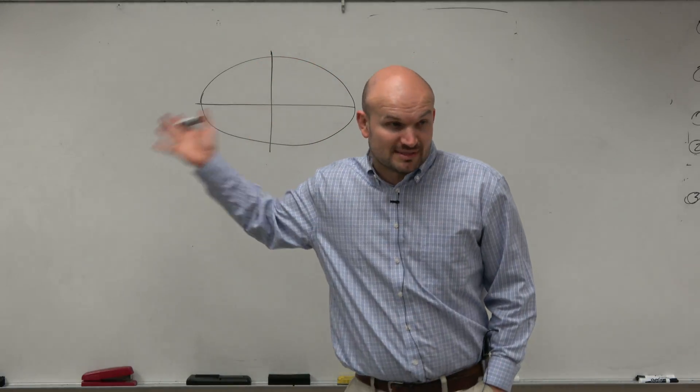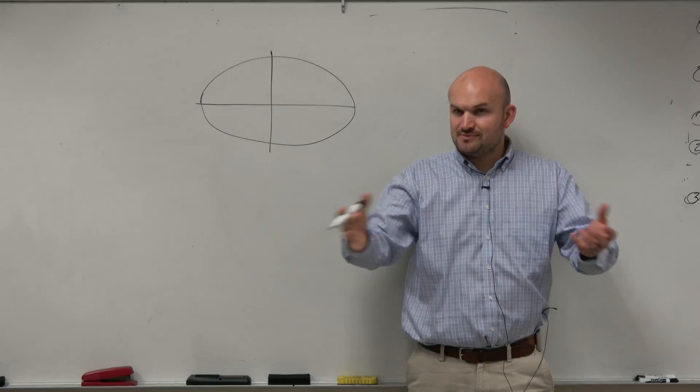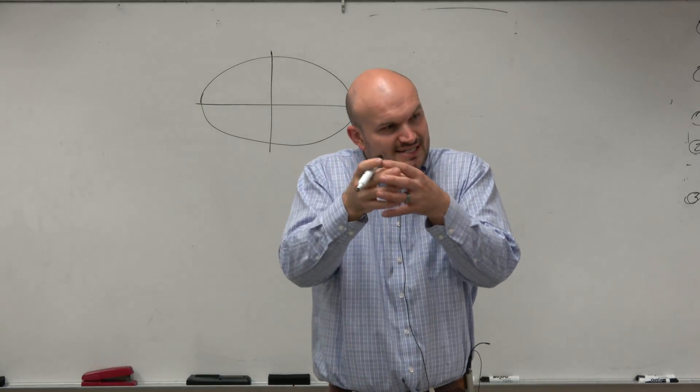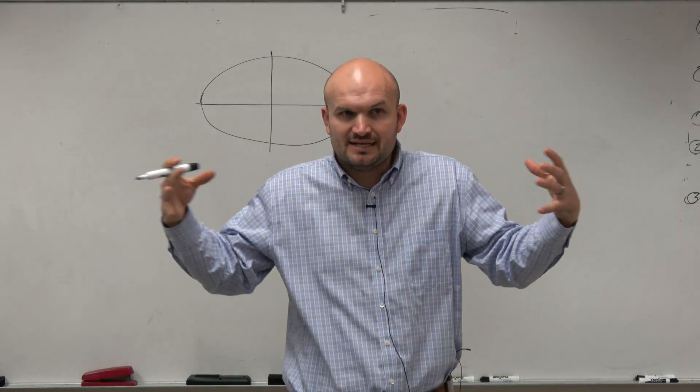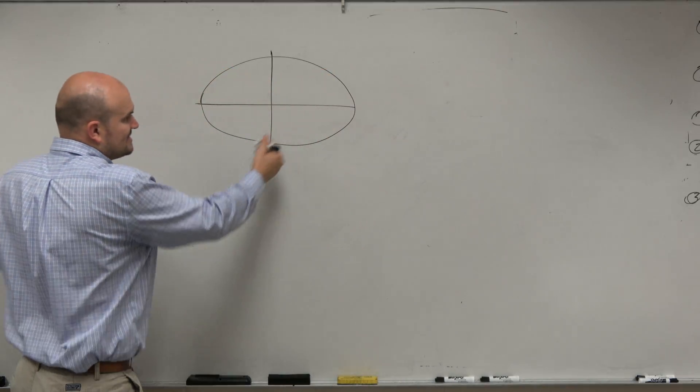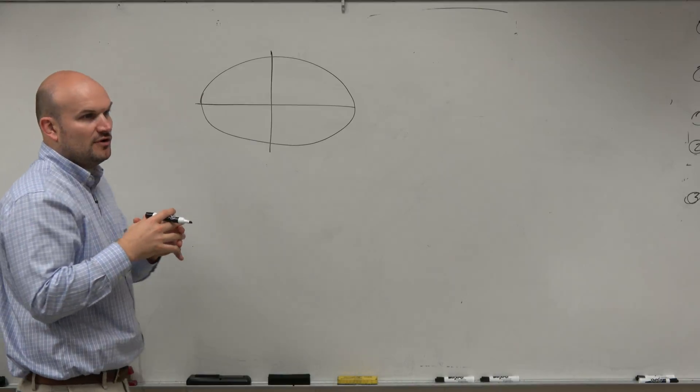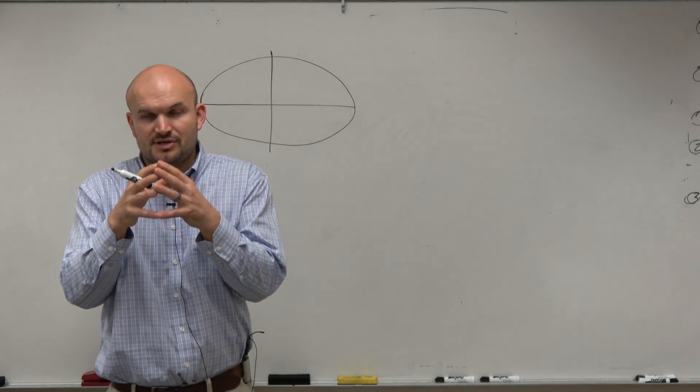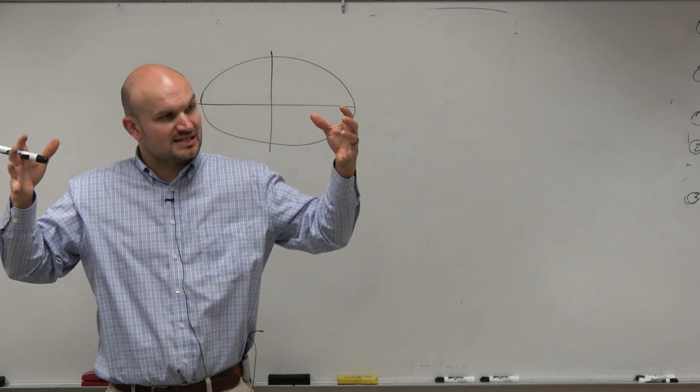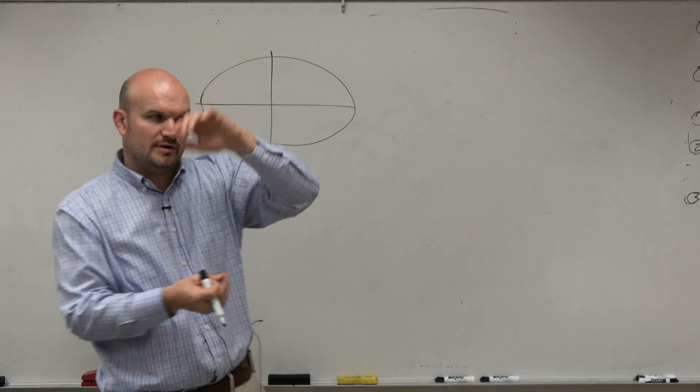So last class, we talked about the ellipse, right? And on the ellipse, guys, we talked about it. Basically, it resembles like a circle, but it's even elongated, right? One side is kind of elongated. Now, for this kind of review, I'm just going to focus on the ellipse where it's elongated horizontally. But we also know we looked at it where it could be elongated vertically.